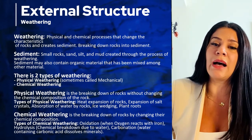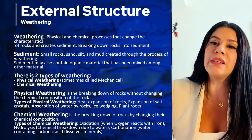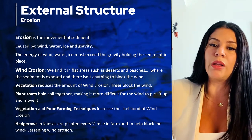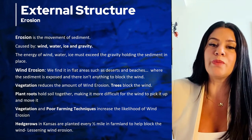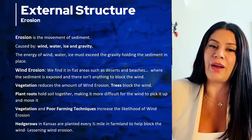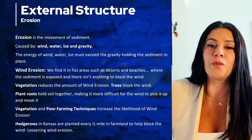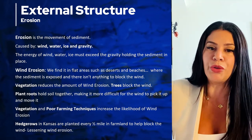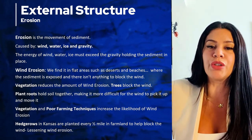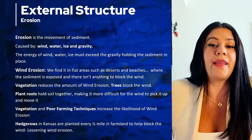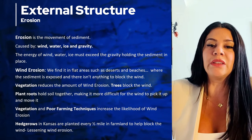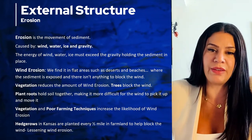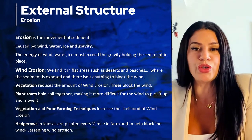Weathering breaks down rocks into sediment through physical and chemical weathering. When sediment is moved, this is called erosion. Erosion is caused by wind, water, ice, and gravity, whenever the energy of these forces is strong enough to pick up and move the sediment. Wind erosion is most common in flat areas such as deserts and beaches, where the sediment is exposed and there is nothing to block the wind.